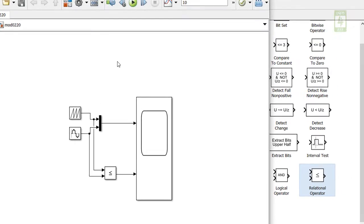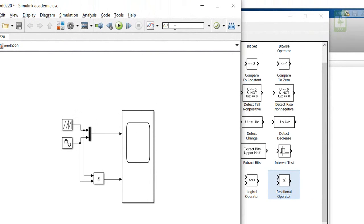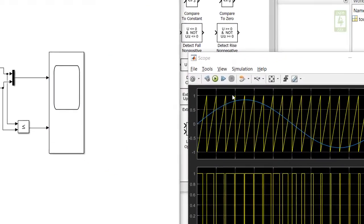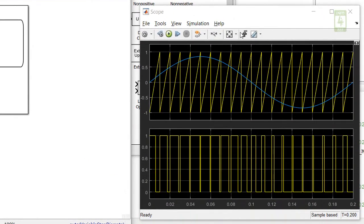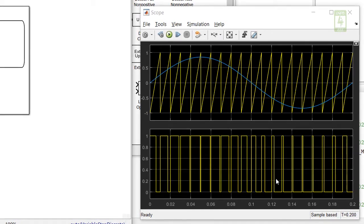Now our simulation is ready. Now run this simulation for 0.2 second. Now you can clearly see here our desired sawtooth wave and error signal is generated here and switching sequence is generated here.